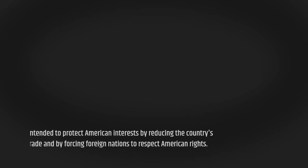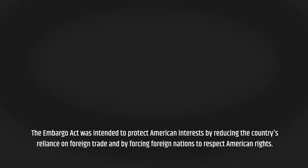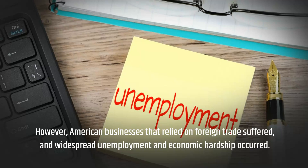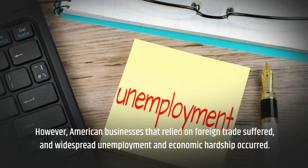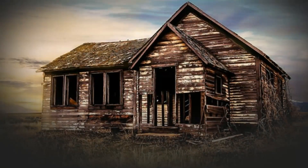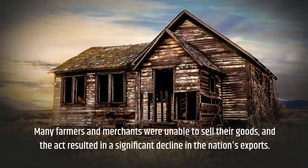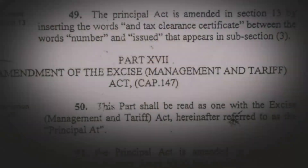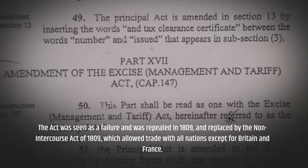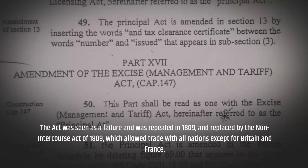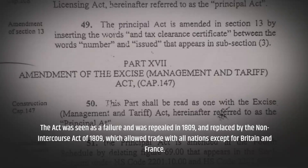The Embargo Act was intended to protect American interests by reducing the country's reliance on foreign trade and by forcing foreign nations to respect American rights. However, American businesses that relied on foreign trade suffered, and widespread unemployment and economic hardship occurred. Many farmers and merchants were unable to sell their goods, and the act resulted in a significant decline in the nation's exports. The act was seen as a failure and was repealed in 1809, and replaced by the Non-Intercourse Act of 1809, which allowed trade with all nations except for Britain and France.